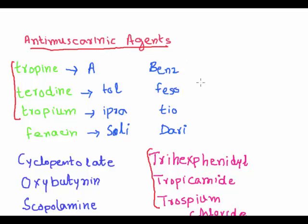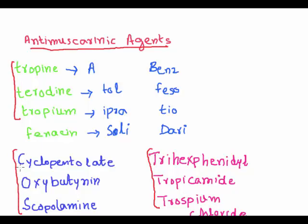So this becomes 11 drugs total: atropine, benztropine, tolterodine, fesoterodine, ipratropium, tiotropium, solifenacin, darifenacin, trihexyphenidyl, tropicamide, and trospium chloride. In addition, we have three other drugs remembered by the mnemonic COS.